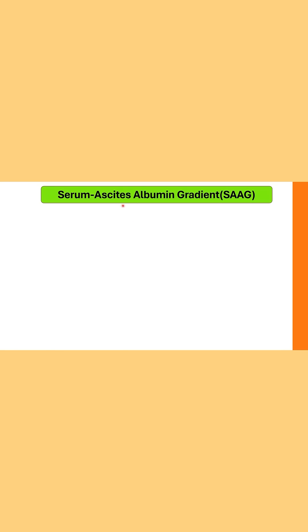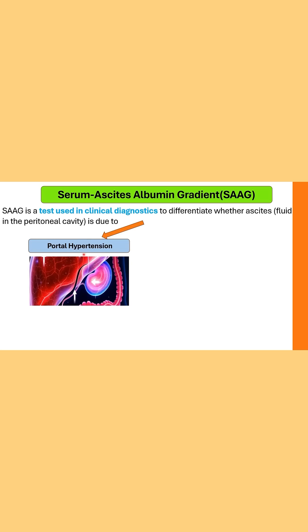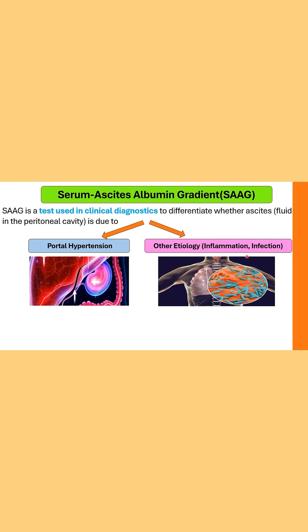So, what is this serum ascites albumin gradient? It is a test used in clinical diagnostics to differentiate whether ascites — that is the fluid in the peritoneal cavity — is due to portal hypertension or some other etiology like inflammation or infection. It is calculated by subtraction of ascitic fluid albumin from the serum albumin values, and the units for SAAG are grams per deciliter.